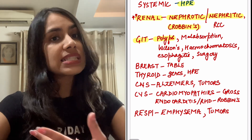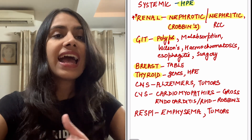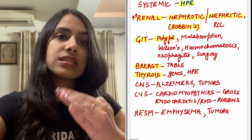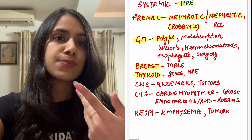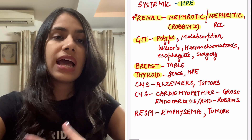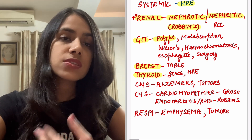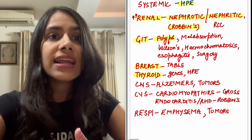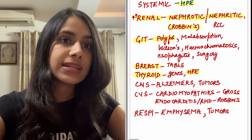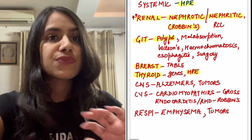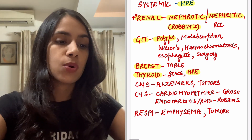Breast and thyroid are topics you cannot leave. In PATH, for breast there is the classification table — the types luminal A, B, etc. — and genes and factors, everything comes in breast. The same applies to thyroid. Thyroid histopath also comes quite frequently, so you have to do these along with genes for cancers. These are very hotly asked topics.